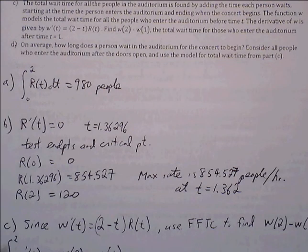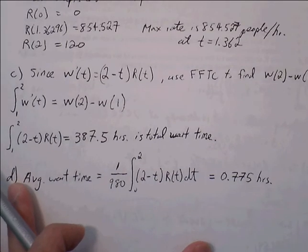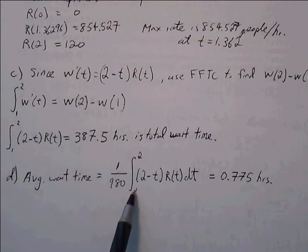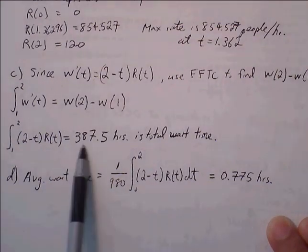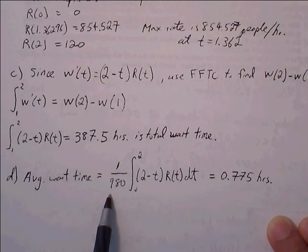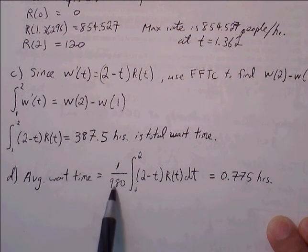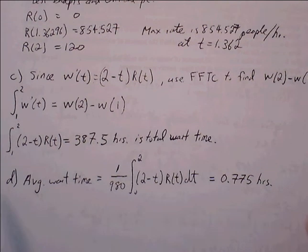Part D: On average, how long does a person wait? If we want to find out the average wait time, we use average value theorem. We can think of it in terms of number of people. This is the total wait time that we just found, 387 hours. If we take the total wait time divided by the total number of people, that will give us an average wait time per person. 387.5 hours is the result of the definite integral divided by the number of people who are waiting. The average is about 0.775 hours, or roughly about 45 minutes per person waiting for the concert to begin.